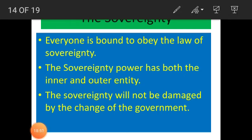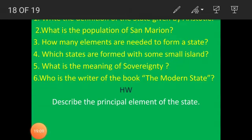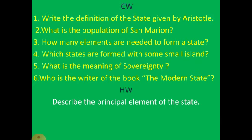So the four essential elements of the state are: the people, the specific geographical territory, the government, and the sovereignty. If you don't understand anything, talk to your respective teacher. For classwork, there are five easy questions — those who watched the video carefully can write the answers within one or two minutes and submit to their subject teacher. For homework, describe the principal elements of the state. Thank you very much. See you next class. Assalamualaikum warahmatullahi wabarakatuh.